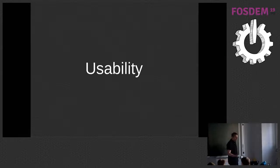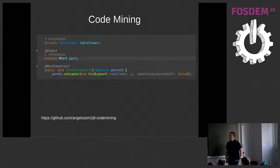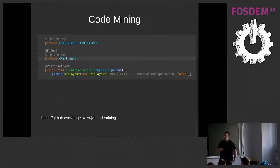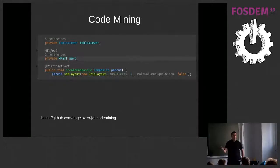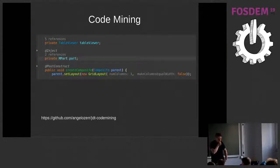We'd also like to improve the usability of Eclipse, and one of the things introduced in the last release is code minings. The idea is basically borrowed from Visual Studio Code — you add information to the text editor without changing its content, giving the user information about their code. For example, I can see with code mining that a TableViewer is referred to five or six times, and I can click on it and see the references. It makes it much easier to find public methods which are not used anymore.